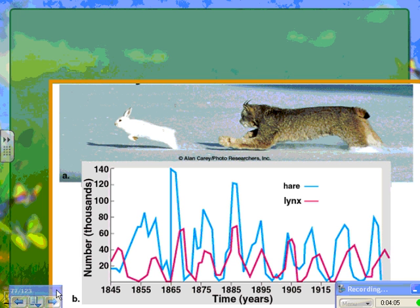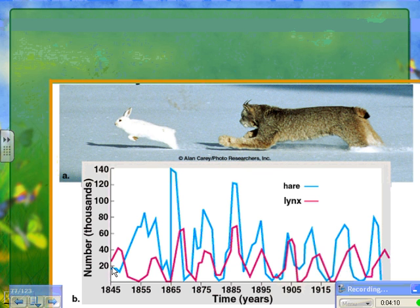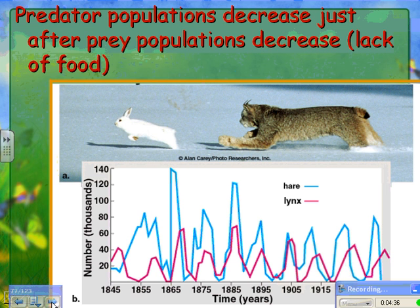Here's a famous example of the snowshoe hare and the lynx. The lynx is shown in pink. Every time you see the hare population increase, the lynx population increases a little bit after that. The idea is that if you have more hares around, there will be more lynx around. And when the hare population declines, the lynx population declines too because they won't have as much food. So predator populations decrease just after prey populations decrease, sometimes because of a lack of food.